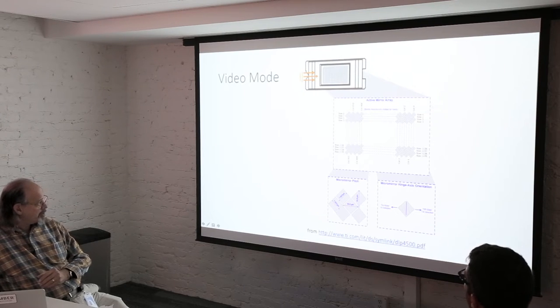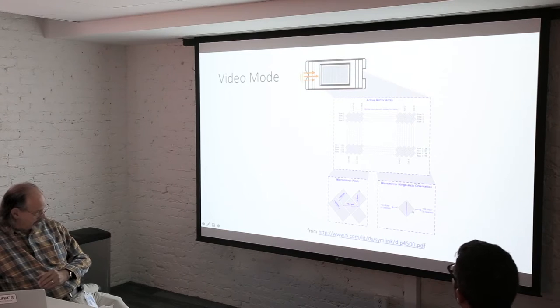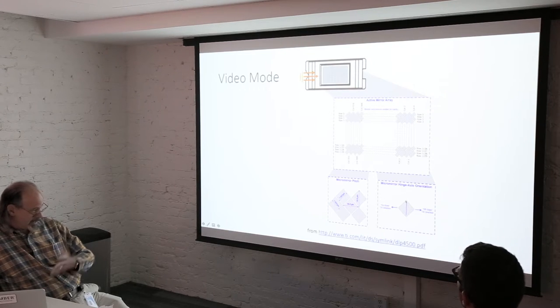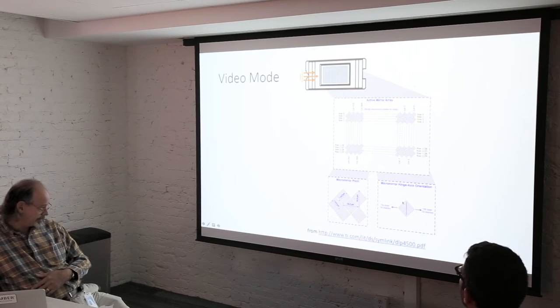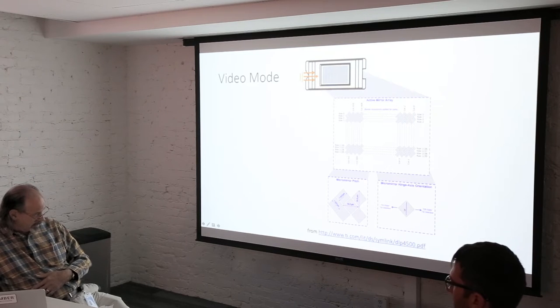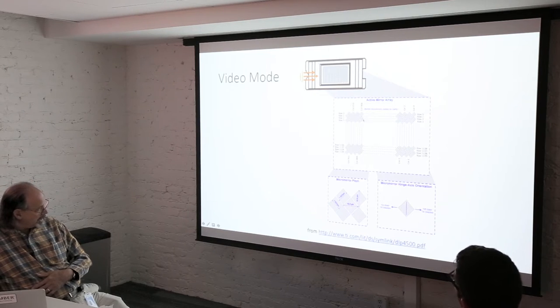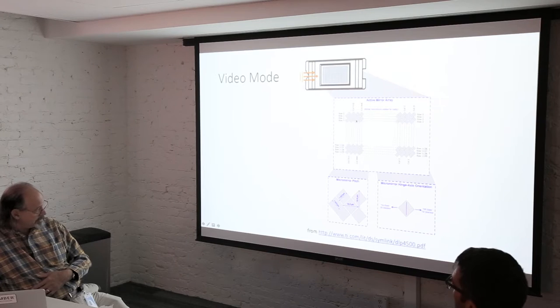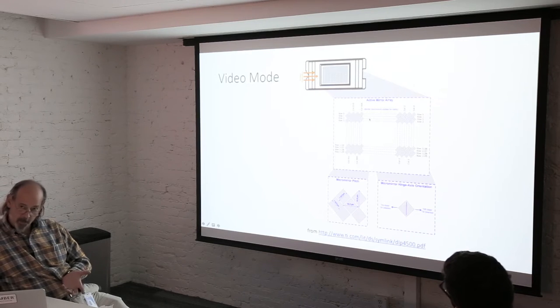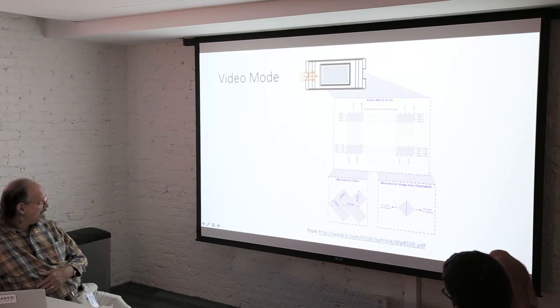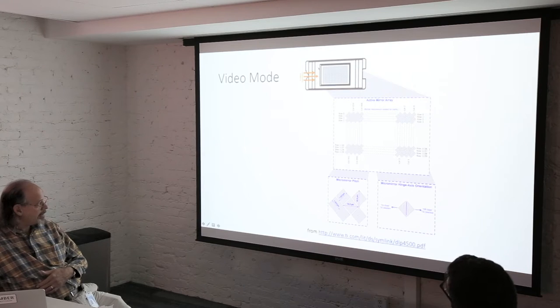Inside the projector, there's this digital micromirror device, or DMD. It's got tens of thousands of these little tiny mirrors, each of which tilts on an axis along their diagonal, and that's how they modulate the light that gets sent to our print area. So the light has to come in from the side, perpendicular to this diagonal, and what they chose to do was to orient all of those individual micromirrors in what they call a diamond orientation.